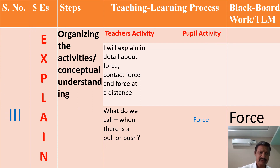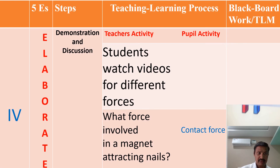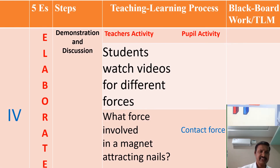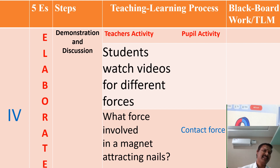Explain is the third phase of the five E's, which involves organizing the activities for conceptual understanding, demonstration, and discussion. Elaborate is the fourth phase of the five E's model, which also includes demonstration and discussion.